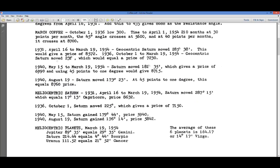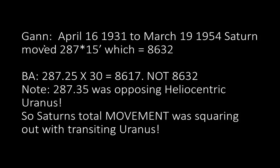We already did these areas up here. We're going to start today on this video on heliocentric Saturn and work our way down. April 16, 1931 to March 19, 1954, Saturn moved 287 degrees 15 minutes, which equaled 8,632 B.A.